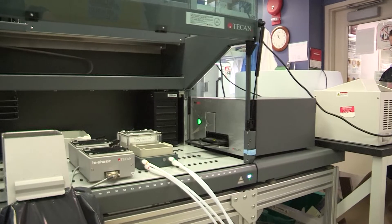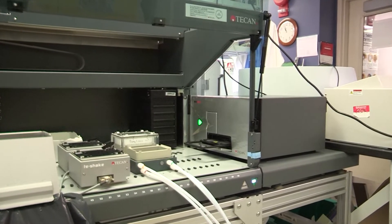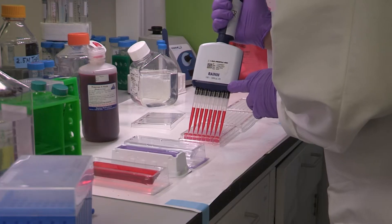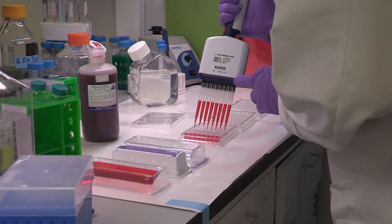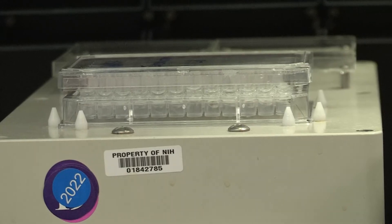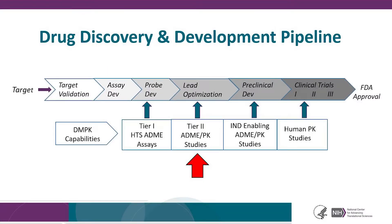To run our high-throughput Tier 1 ADME assays, we are equipped with two TECAN automated liquid handler workstations. These Tier 1 data offer essential information regarding basic ADME properties to help project teams optimize their compounds and prioritize or advance compounds further into Tier 2 studies. Compounds that show a reasonable balance of ADME properties, along with potency and other parameters, move further along in the drug discovery process.